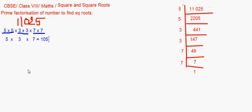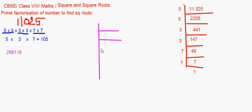We can do another example with a bigger number: 298116. We follow the same method of expressing it as a product of prime factors.